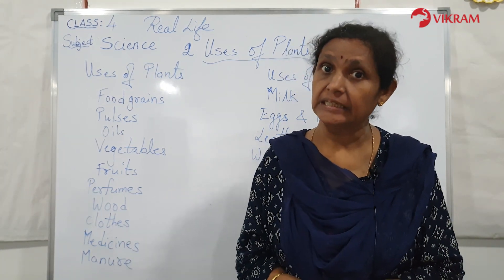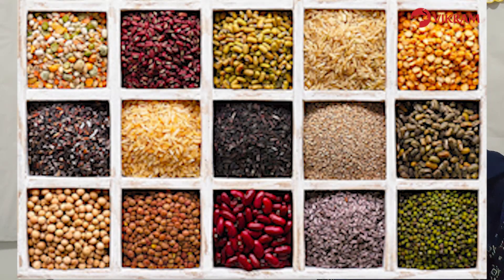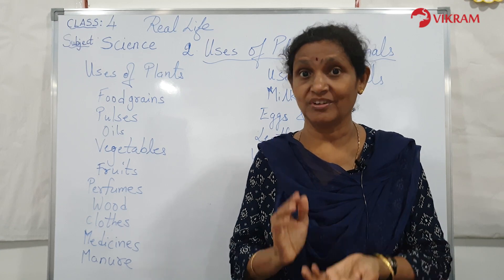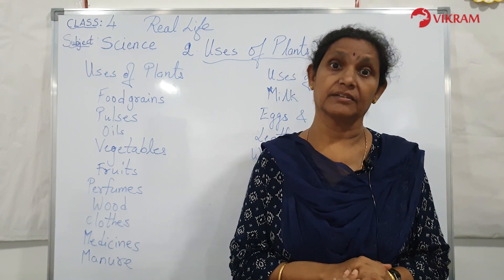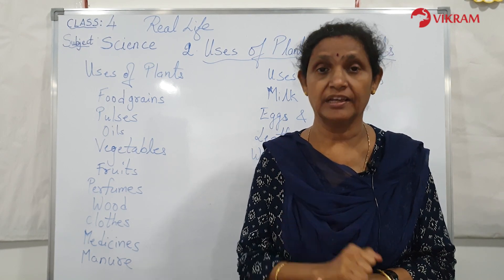The second point is pulses. Peas, beans, and dals like black gram, Bengal gram, red gram, etc. are all called pulses. They are rich in proteins. When your mother makes dal along with chapati or rice, you should eat it because the proteins give you very good health.